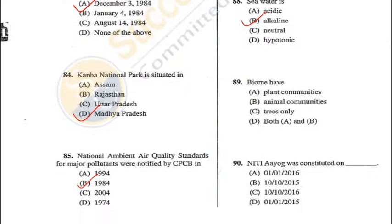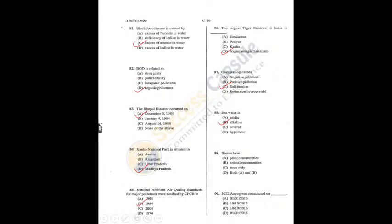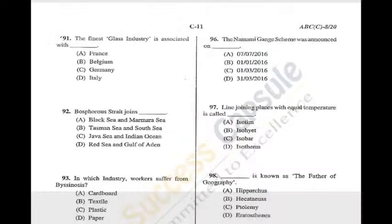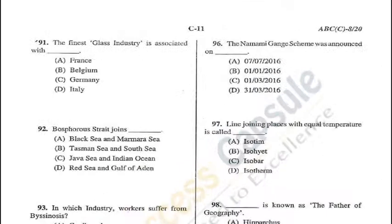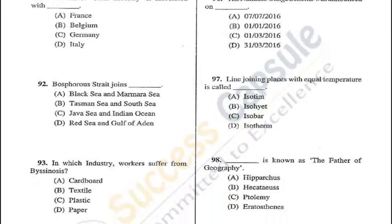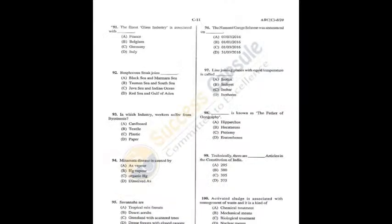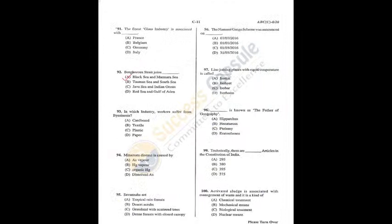Question 90: NITI Aayog (National Institution for Transforming India) was constituted on 1st January 2015, replacing the Planning Commission — D is the correct answer. Q89 = D, Q90 = D. Question 91: The finest glass industries are associated with Italy — D is the correct answer. Question 92: The Bosphorus Strait joins the Black Sea with the Sea of Marmara — A is the correct answer. Q92 = A, Q91 = D.